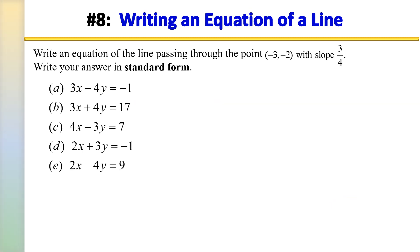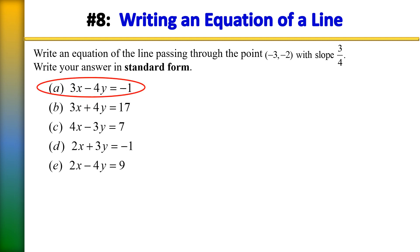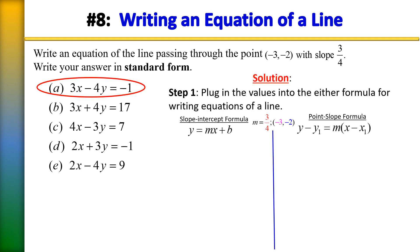Number 8: write an equation of the line passing through the point negative 3 comma negative 2 with slope 3 fourths. Write your answer in standard form. The correct answer is choice A. To write an equation of a line you need the slope and a point on the line. You can use either the slope-intercept formula or the point-slope formula. I'll show both methods.